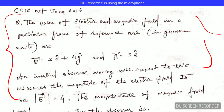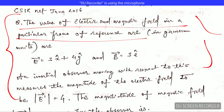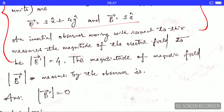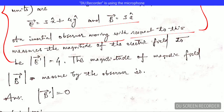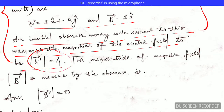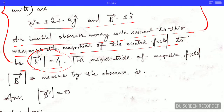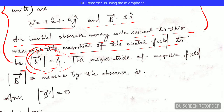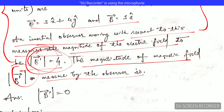The question states: the values of electric and magnetic field in a particular frame of reference are given. An inertial observer moving with respect to this frame measures the magnitude of the electric field to be a certain value E prime. The question asks what will be the magnitude of the magnetic field B prime measured by that observer.